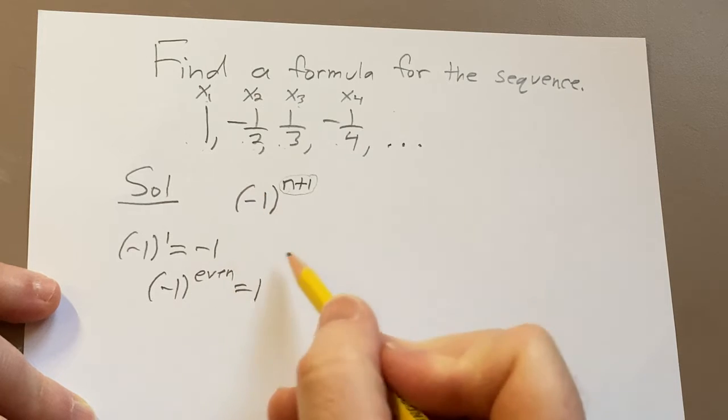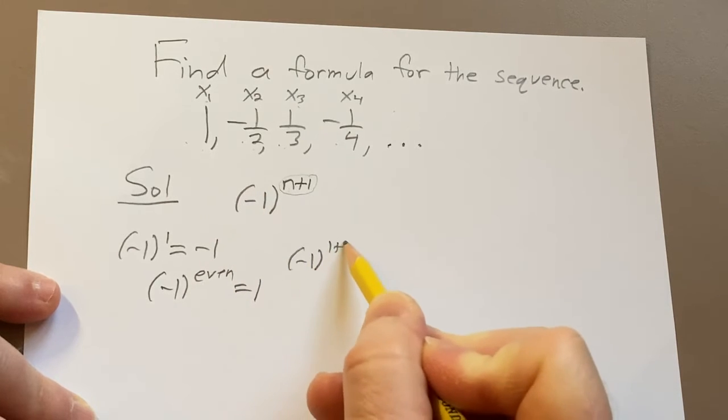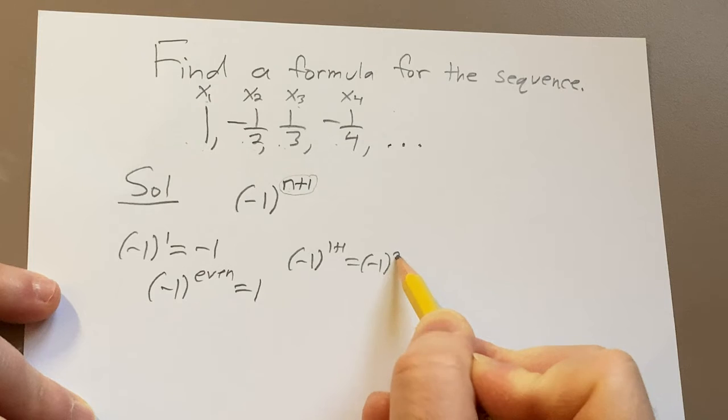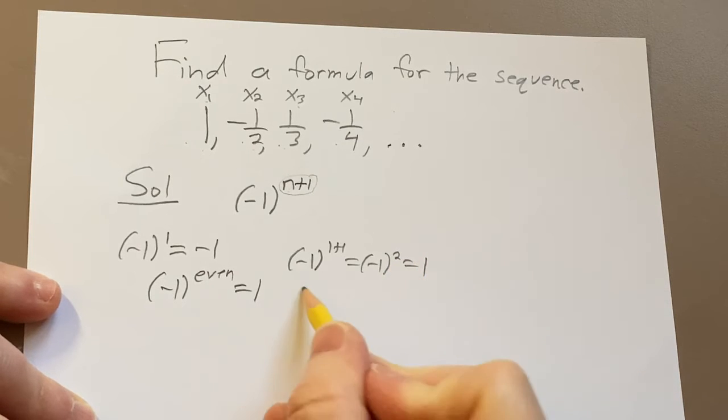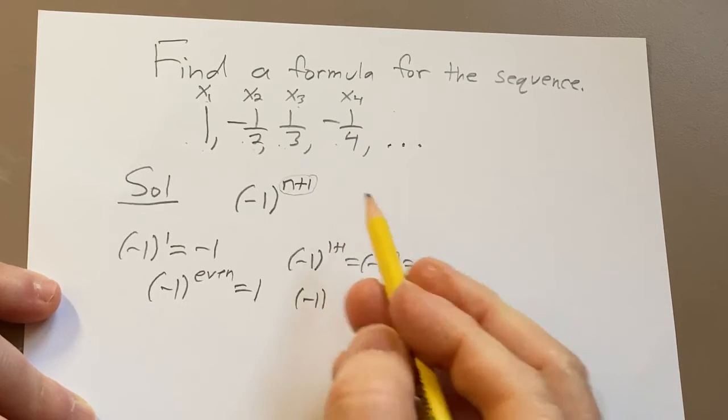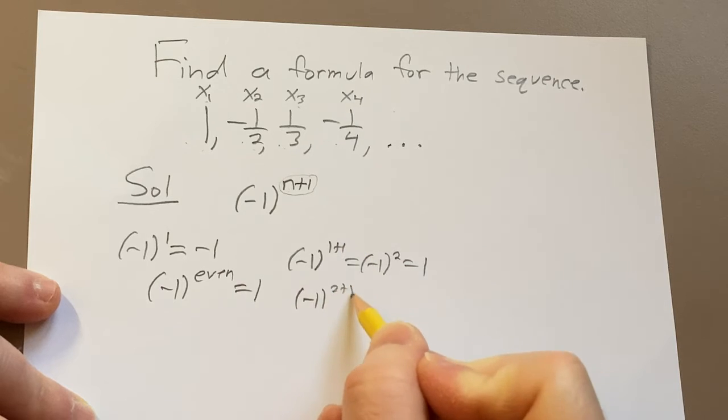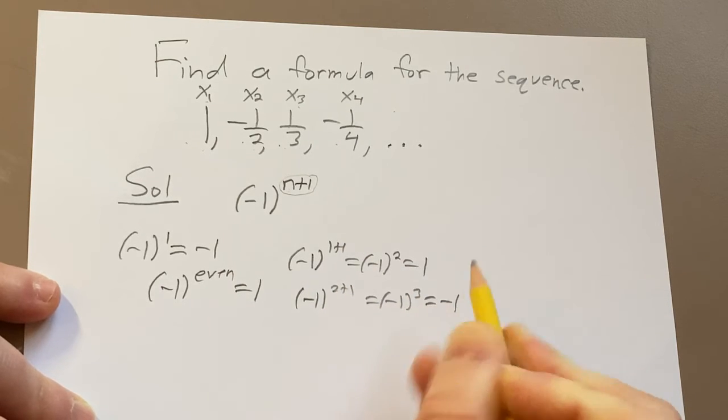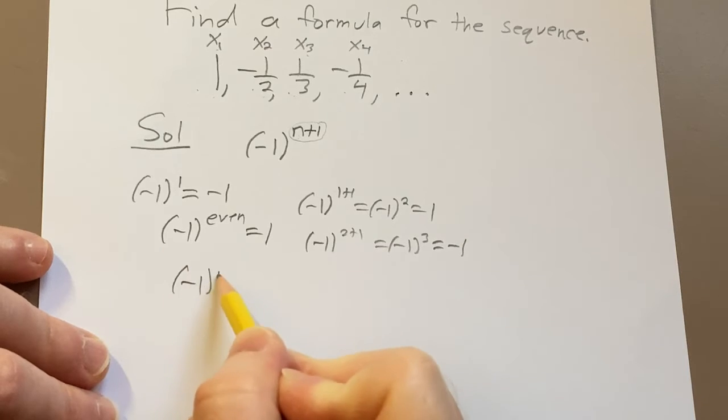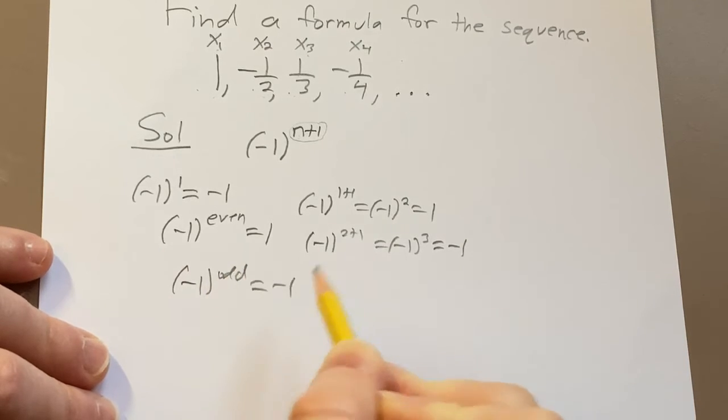So for example, if I plug in one, I'll get one plus one, so that's two, so I get one. If I plug in two, I get two plus one, that's three, so that's negative one. And whenever it's odd, negative one to an odd number is negative one.